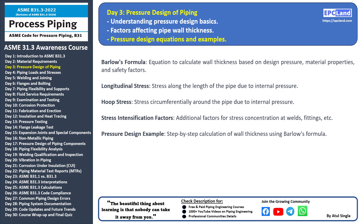Barlow's formula takes into account both longitudinal stress — which runs along the length of the pipe and is caused by the internal pressure of the fluid being transported — and hoop stress, which acts circumferentially around the pipe due to internal pressure. Both are critical factors in determining the required wall thickness. Stress intensification factors are additional factors applied to the calculated stresses to account for stress concentration at points like welds, fittings, and other discontinuities in the piping system.